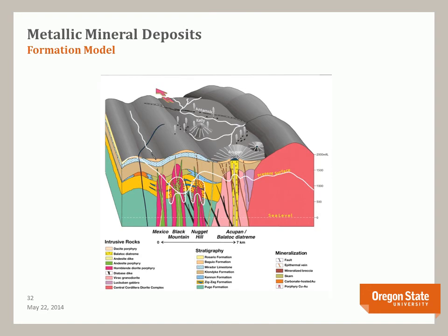How do metallic mineral deposits form? Here is a model showing one type of deposit in Mexico. There's a pluton here; this is what the surface used to look like — a series of volcanoes and hot springs — and here is the present surface. These are all igneous features intruding into sedimentary rocks. Hot fluids associated with the plutonic event transport the ingredients to make ore deposits, which form along fractured areas. The main point is that metallic ore deposits are associated with an igneous event, fracturing, and movement of fluids.